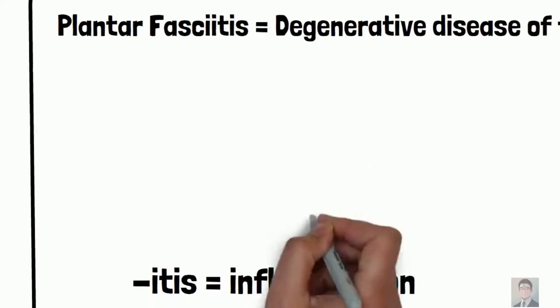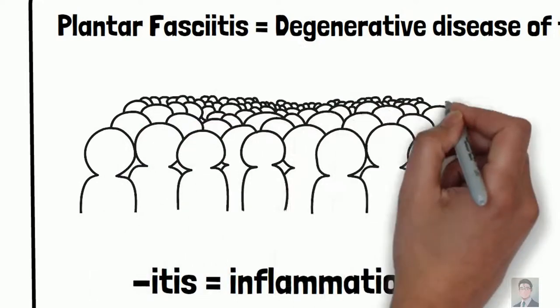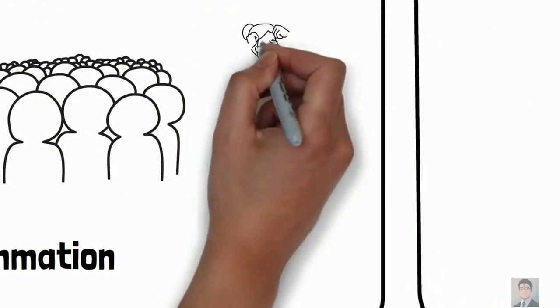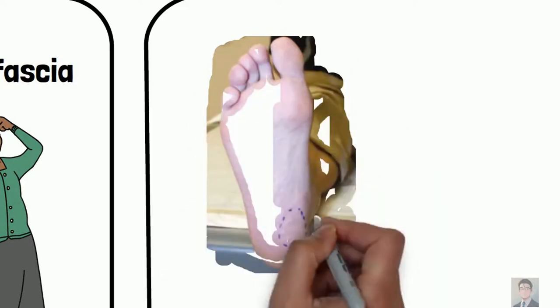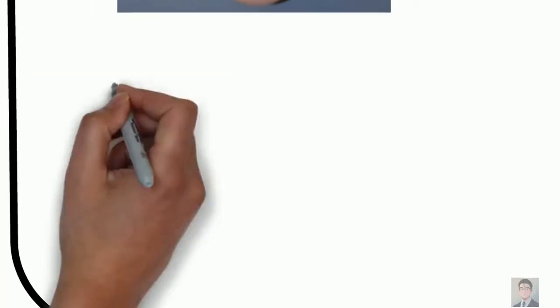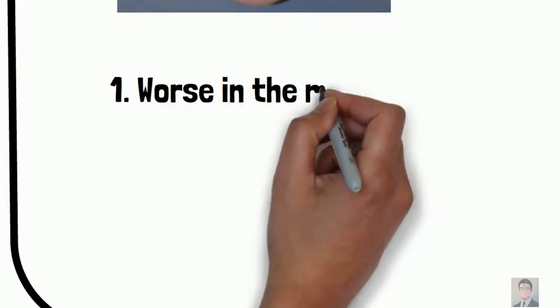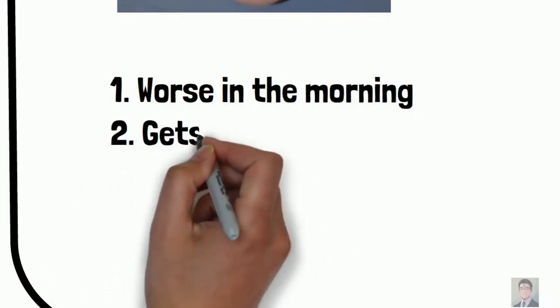It happens in about 10% of people at some point in their lifetime, and it's more common in women from their 40s to 60s. It's usually with pain here at the medial tuberosity of the calcaneus, usually worse in the morning, gets better as you move around throughout the day. It's that first step of the morning that hurts like hell.